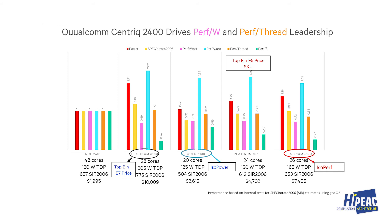The top-end Skylake has 28 cores and sells for a whopping $10,000. It's about 18% higher in overall performance than our chip, which runs at 120 watts. On a per-core basis it's twice the performance, but on a per-thread basis it's roughly equal. If you look at performance per watt, there's a huge difference.